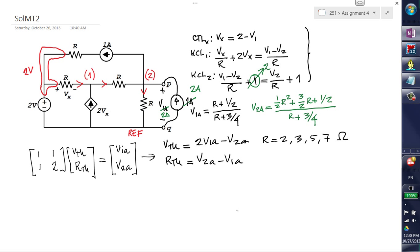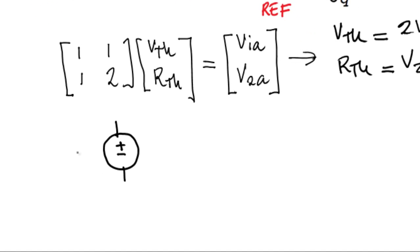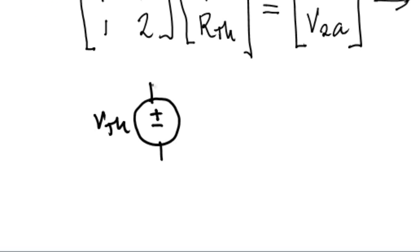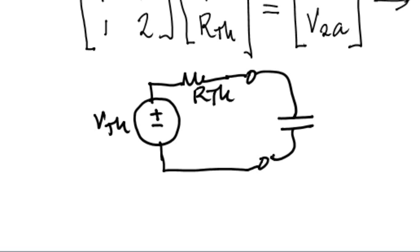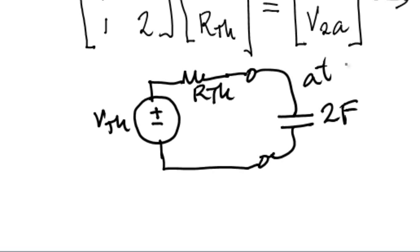Let's go for the second part of this question. Once we have the circuit represented by Thevenin at that port. Like so, V7N and R7N. At that port, we connect, following the instructions of the exercise, a capacitor. A huge, unrealistic, 2 farads capacitor. At T equals zero. We do that connection.